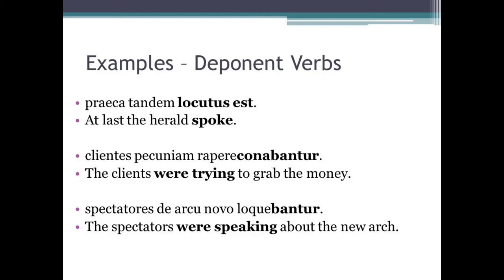Now let's have a look at a few examples of deponent verbs. 'Praeco tandem locutus est' — at last, the herald spoke. 'Clientes pecuniam rapere conabantur' — the clients were trying to grab the money. 'Spectatores de arcu novo loquebantur' — the spectators were speaking about the new arch. You'll notice with all of these deponent verbs that they are formed exactly like the passive, however they have active meanings.